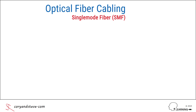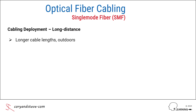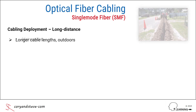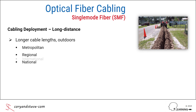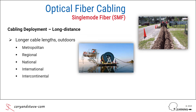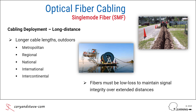Single-mode fiber or SMF cabling deployments can be divided into two groups. The first is long-distance or long-haul, where cable segments multiple kilometers in length are spliced together to link buildings within a city or in different cities, countries, or continents. The most important characteristic of the single-mode fibers in these deployments is very low attenuation or signal loss, which minimizes the number of repeaters needed to regenerate signals along the length of the span.